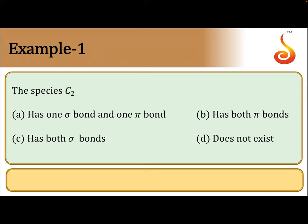Now, if I write C2, how many electrons should I fill? Valence electrons: 4, means 4 plus 4 — 8 electrons total we need to fill. Each carbon atom has 4 electrons, 4 into 2, so 8 electrons I should fill.